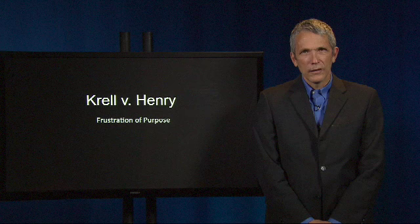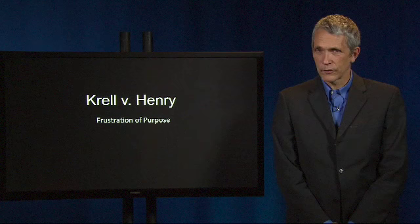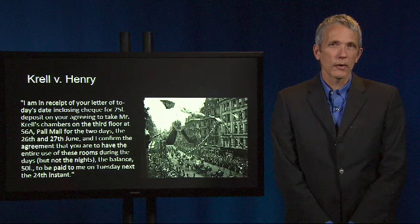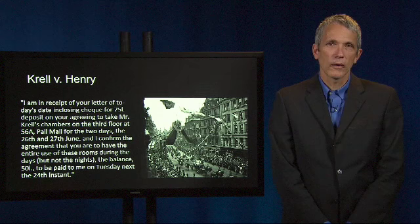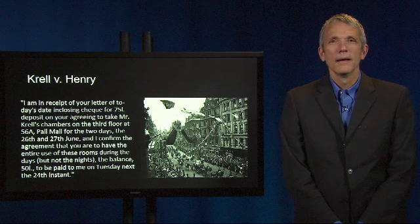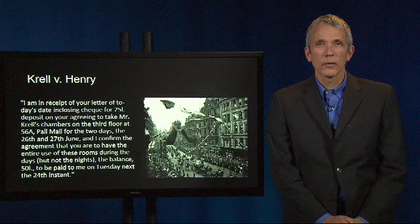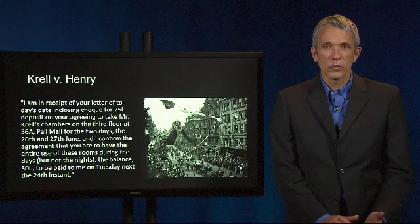We do this by looking at a 1903 English case called Krell v. Henry. In Krell, the plaintiff Krell owned an apartment from which the coronation procession of King Edward VII was visible. The defendant, Henry, contracted to rent the apartment from Krell on the day of the procession and paid a 25-pound deposit. However, the king fell ill and the coronation was postponed. Henry refused to pay the remaining balance of the contracted rent, which was 50 pounds.